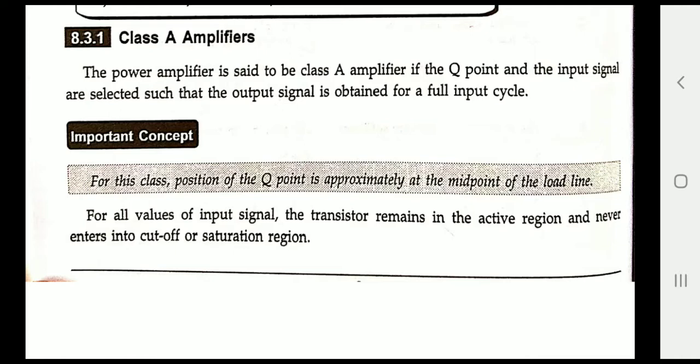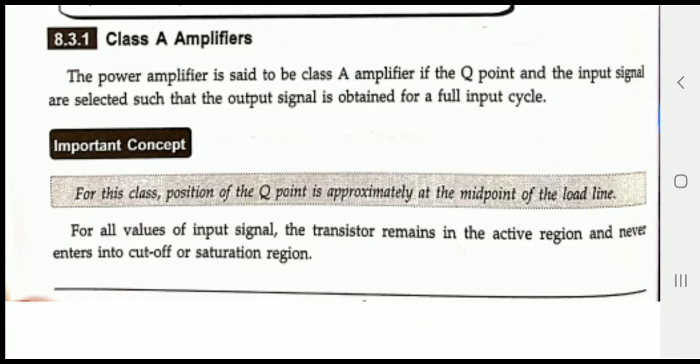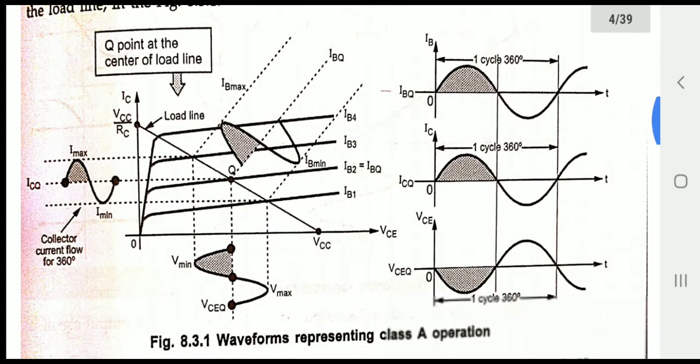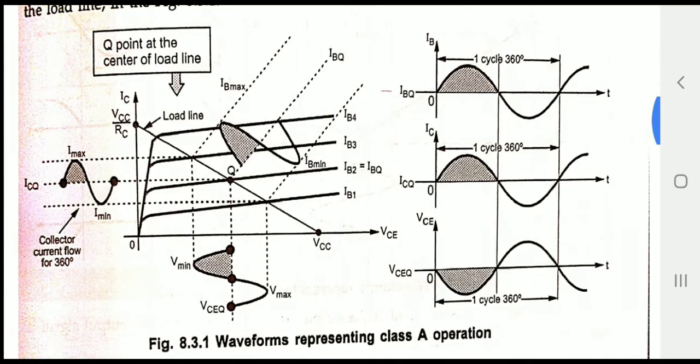According to this, the transistor of a Class A amplifier will only operate in the active region. It will not move on to the cutoff or saturation. It uses a complete 360-degree cycle, which is explained in the graphical representation.